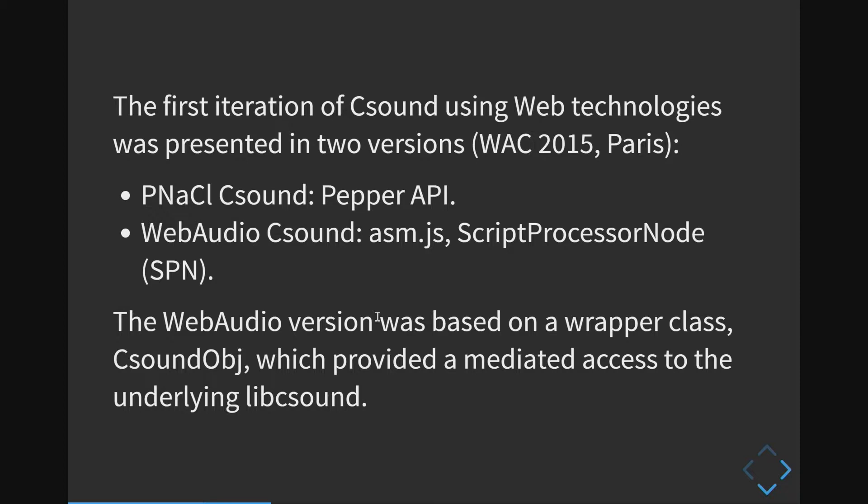The other version we showed at the time was Web Audio CSound, which consisted of CSound C code compiled with Emscripten into asm.js, then using that code being driven by a script processor node. The Web Audio version was based on a wrapper class called CSound obj, which provided mediated access to the underlying LibCSound, which was living in the asm.js space.